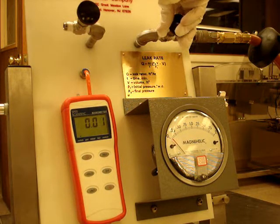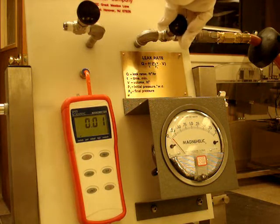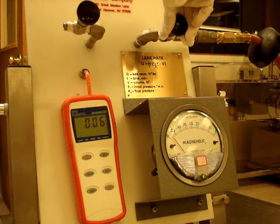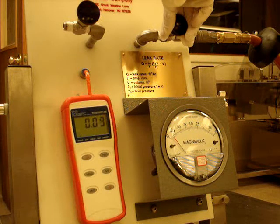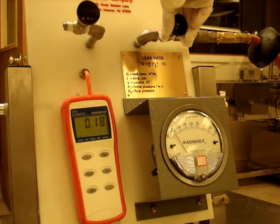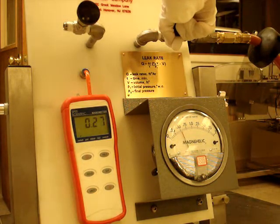Open the inlet air valve to inflate the glove until the pressure of 1.25 inches of water column is achieved. During this step, the operator should be cautious not to over-inflate the glove past the pressure of 1.25 inches of water column to avoid popping the glove.